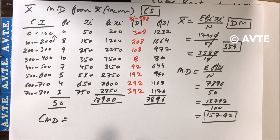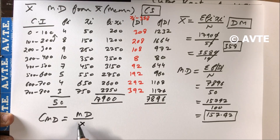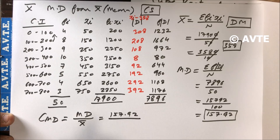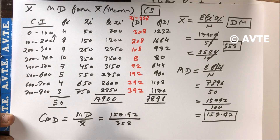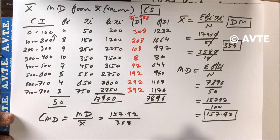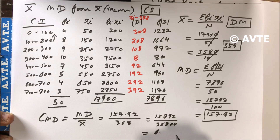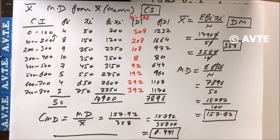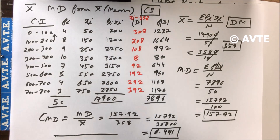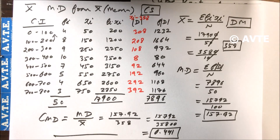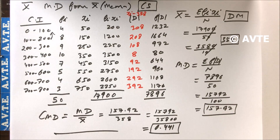Now we find the coefficient of mean deviation. This answer, 157.92, is the absolute measure and the coefficient is the relative measure. Coefficient of MD is mean deviation upon mean: 157.92 upon 358, which equals approximately 0.441. We have now done mean deviation for individual series, discrete series, and continuous series. Next we will do mean deviation from median in all series.